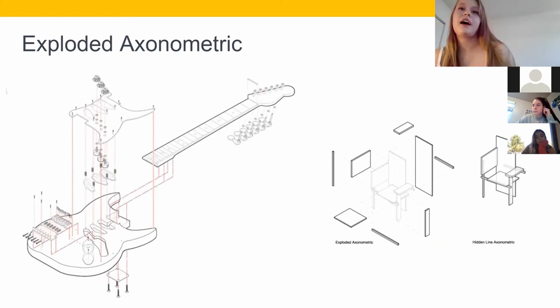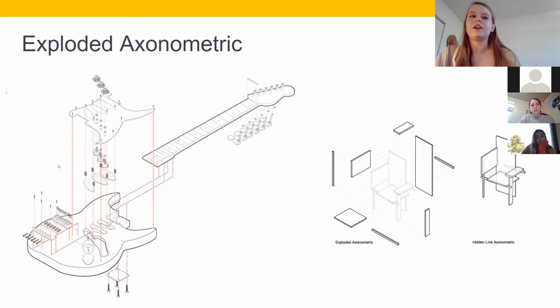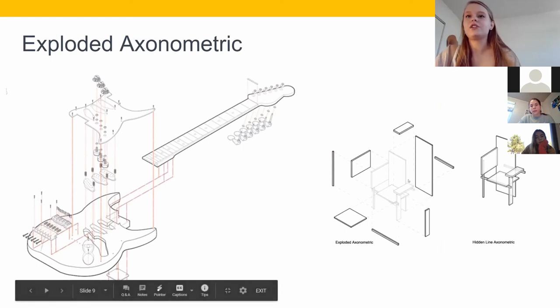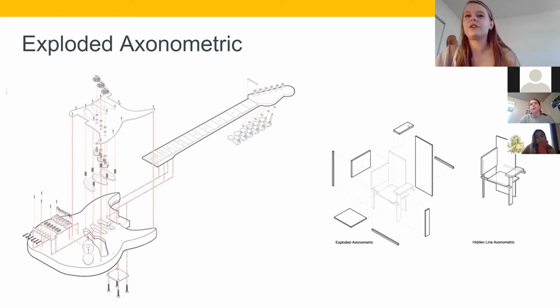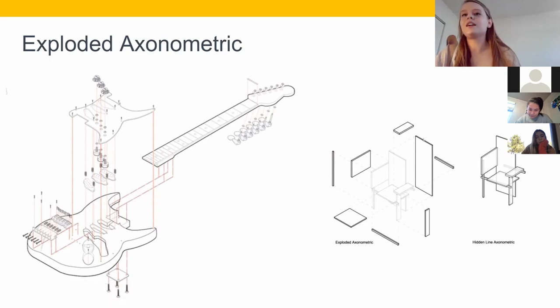So an exploded axon is just showing the different parts and pieces of one of your designs. Say you were designing a guitar and you wanted to show all these little structural pieces, you would just pull those out at parallel angles to the design. So in this chair you can see they've pulled out each element of the chair and then they have these leader lines that show exactly where those elements would piece into the chair. So those are really important when you're pulling out the elements, but you would just pull out each element at a parallel line and then just simply draw it again.